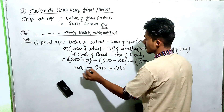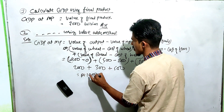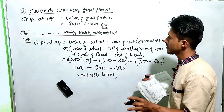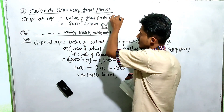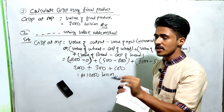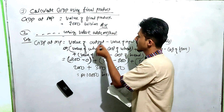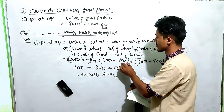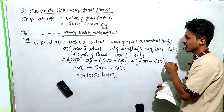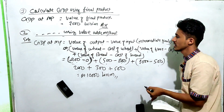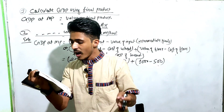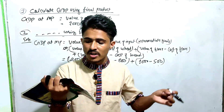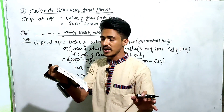The total is equal to Rs. 1,000. You can see that the GDP at MP calculated by the value-added method equals Rs. 1,000, confirming the same answer obtained by the final product method.